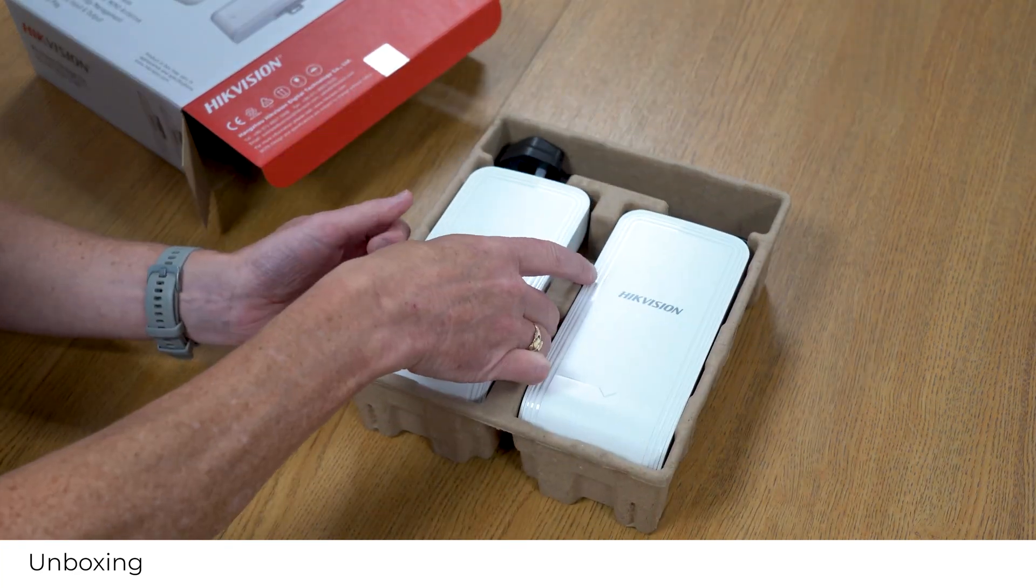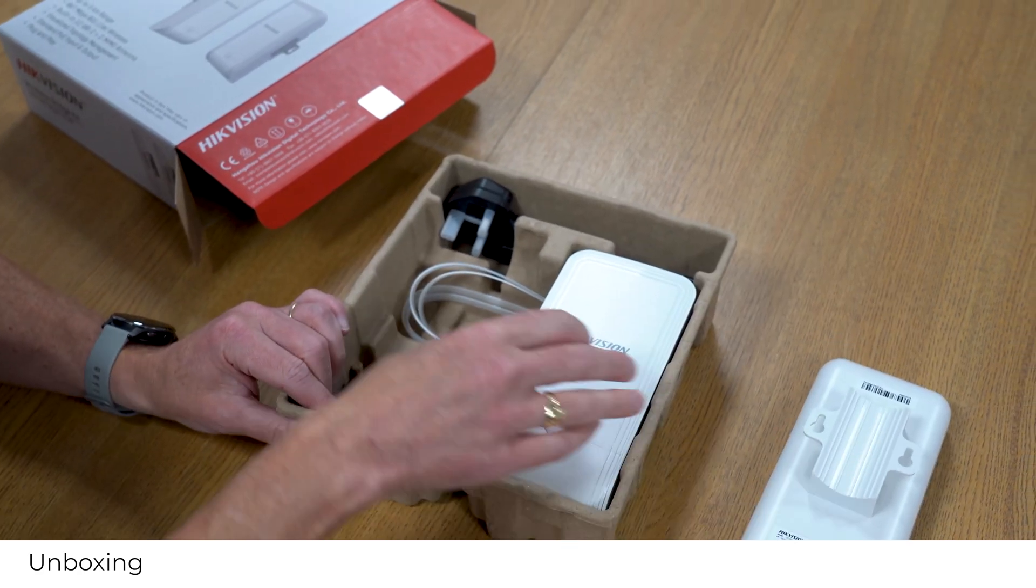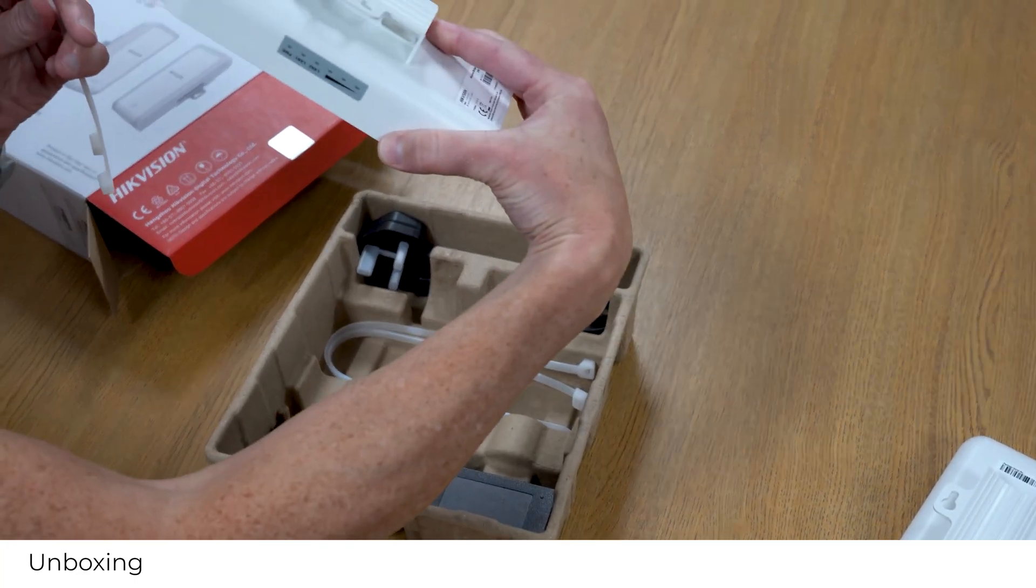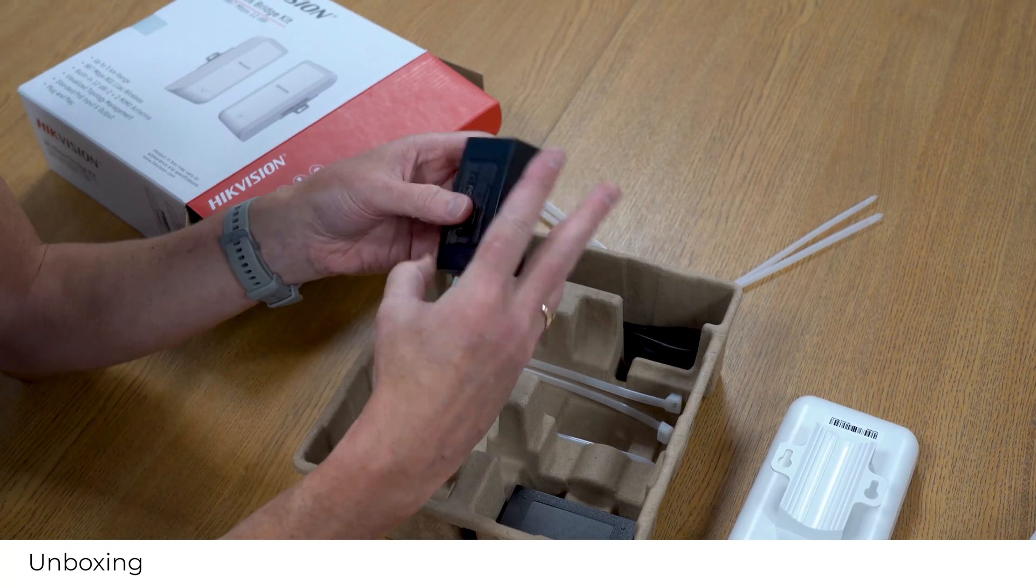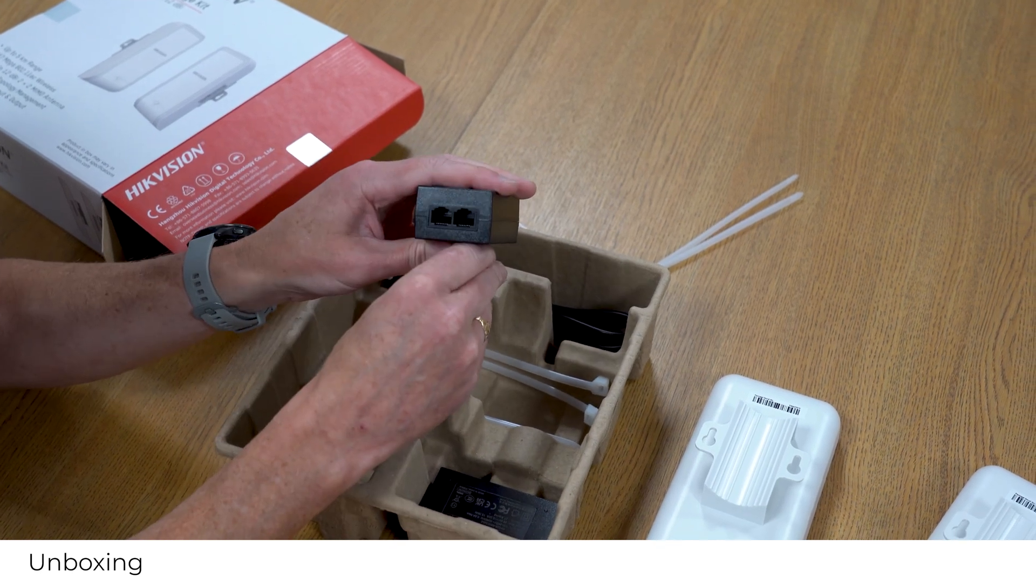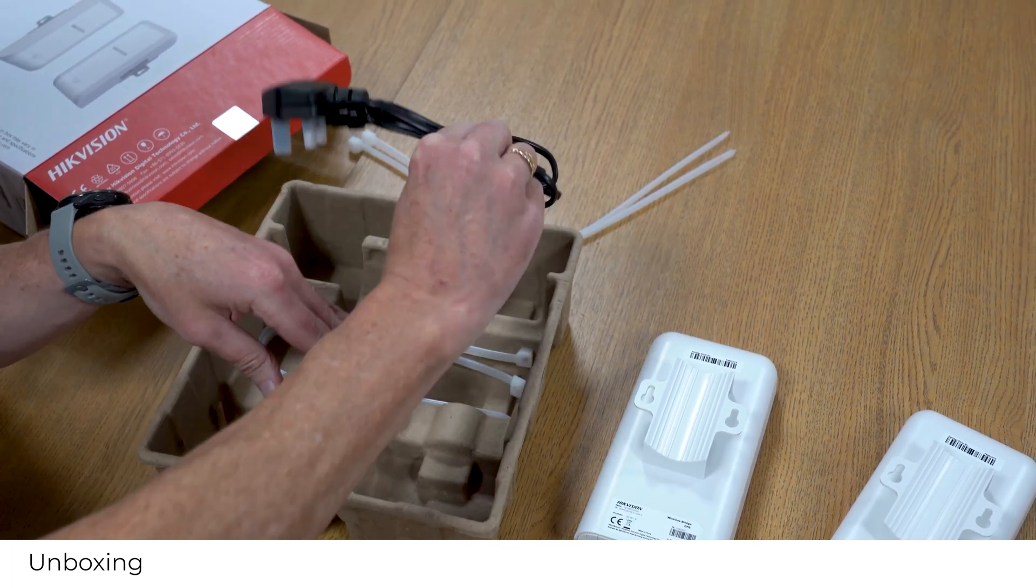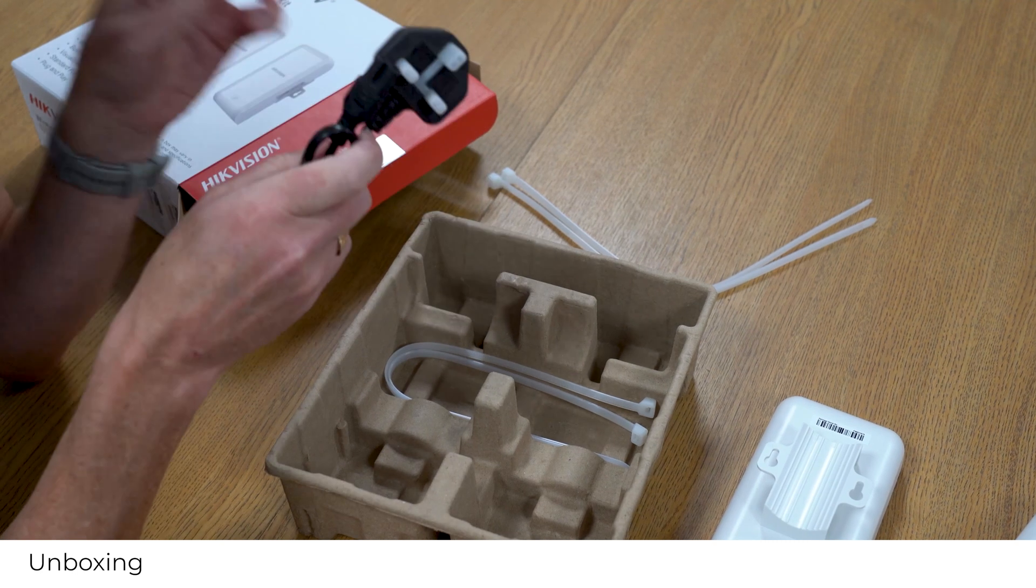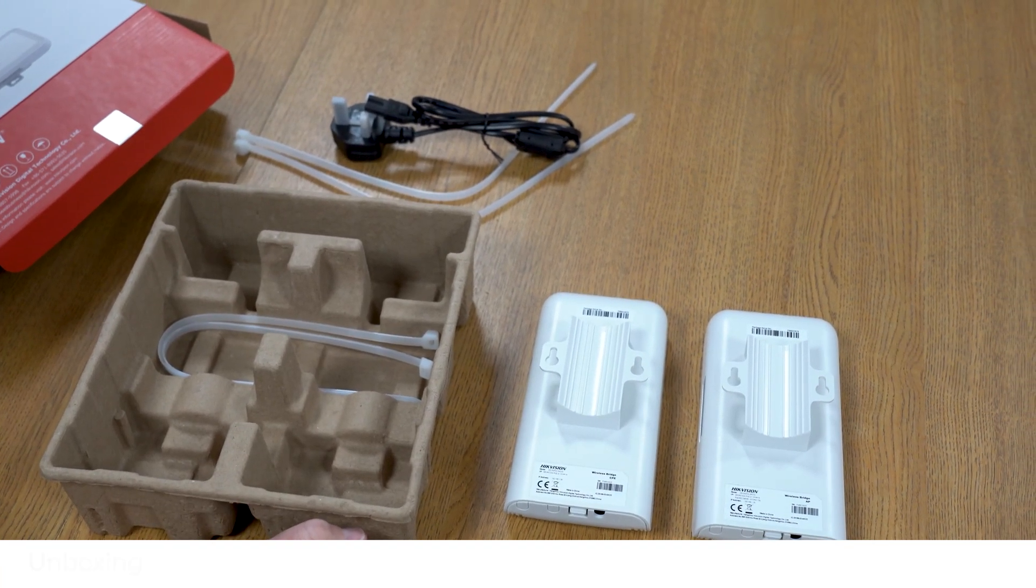In the box: manual, two of these units we'll dig into in great detail shortly, four decent cable ties for pole mounting with built-in pole mount, two decent PoE injectors with 48 volt PoE in and LAN, and two corded plugs for the injectors with the correct Ireland fittings. So everything you need is there.